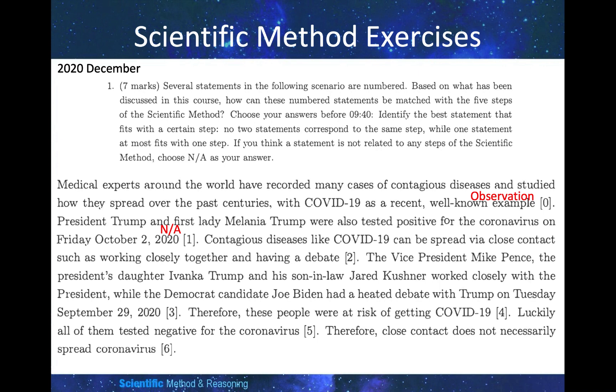Contagious diseases like COVID-19 can be spread through close contact, such as working closely together and having a debate — this is our hypothesis. The Vice President Mike Pence, the President's daughter and son-in-law Ivanka, worked closely with the President, while the Democrat candidate Joe Biden had a heated debate with Trump on Tuesday — this is also N/A because it is not directly related to the hypothesis. Therefore, these people were at risk of getting COVID-19 — this would be a prediction, because by deduction from the hypothesis, those who had close contact were at risk.